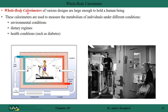Scientists have developed whole-body calorimeters — large enough to hold a human being — to measure metabolism under different conditions. These calorimeters study the effects of environmental conditions, dietary changes, and health conditions such as diabetes on metabolism. Essentially, it's a large, well-insulated calorimeter that measures the heat transferred from the body to the surroundings.